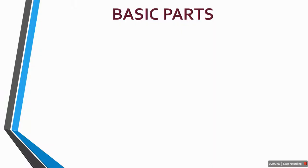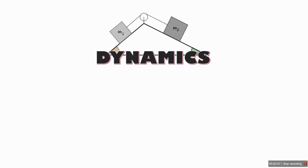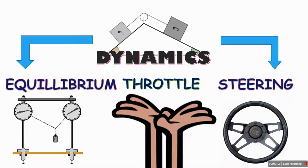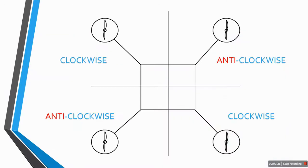Now talking about the dynamics involved in the working of quadcopters, I will be using three terms: throttle, steering, and equilibrium. When I talk about equilibrium, I mean that my quadcopter should not rotate in any axis — the x-axis, y-axis, or the z-axis perpendicular to the x-y plane. The equilibrium condition means the quadcopter should not rotate about any of these axes.